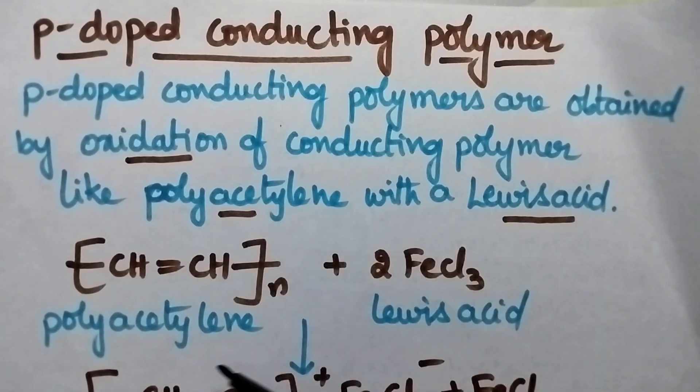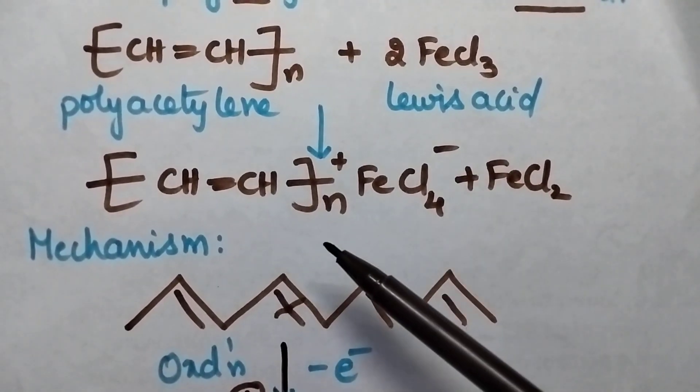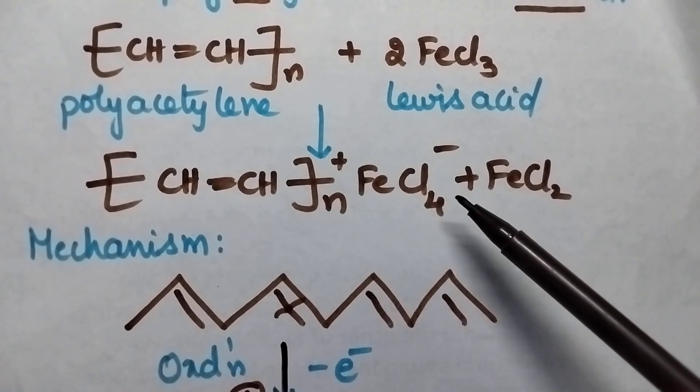Coming to the reaction, polyacetylene when treated with Lewis acid undergoes oxidation and results in the formation of p-doped conducting polymer.